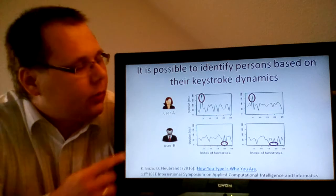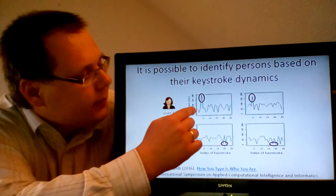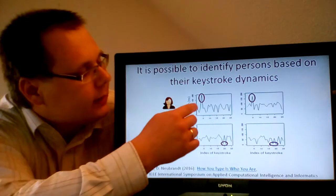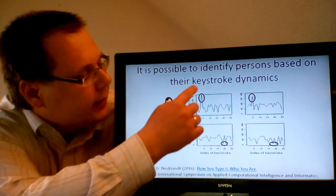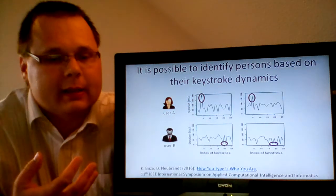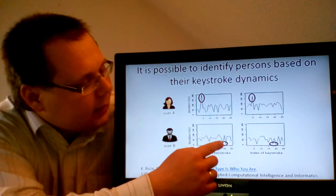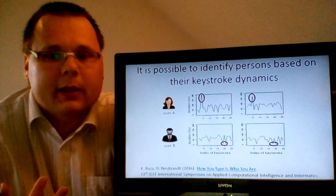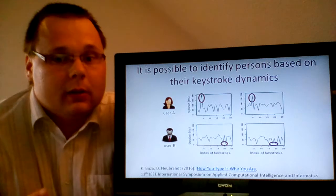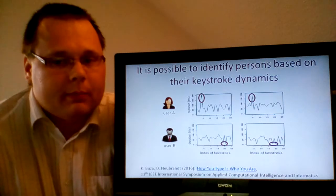It is interesting to observe that user A, whenever she types this sentence, has an exceptionally long keystroke at the beginning of the sentence, whereas the other user, user B, has very short keystrokes around the 20th position. This is, of course, just an illustrative example.